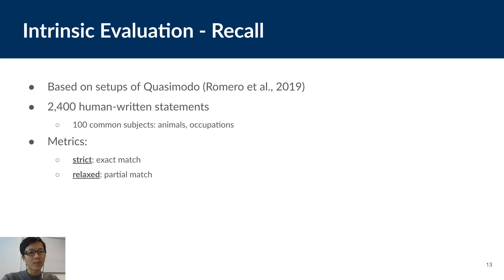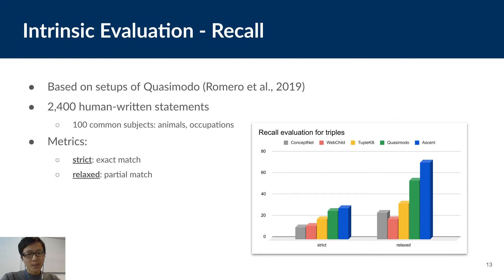And next, to evaluate the coverage of our KB, we performed the same evaluation scheme conducted in the Quasimodo paper. The evaluation is based on 2400 human written statements about salient properties of 100 common subjects. We use two automated metrics here, strict and relaxed. Basically, strict means exact matching and relaxed means partial matching between the assertions in the KBs and the human written statements. For both metrics, our KB always performs better than the others. And that means our KB covers the statements which humans think are salient better than other KBs.